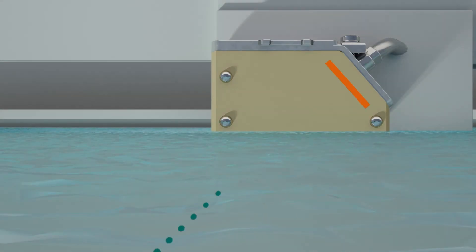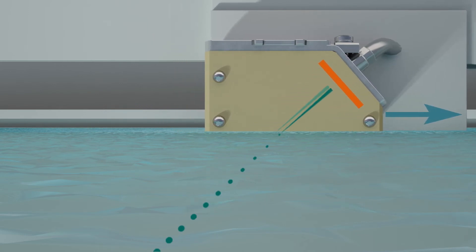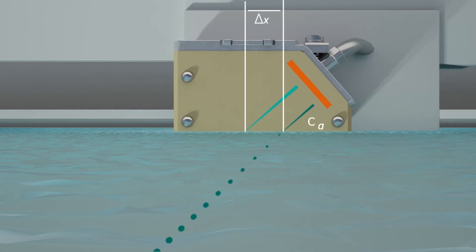During the direct transducer calibration patented by Flexim and named Aperture Calibration, the spatial signal shift, instead of being induced by flow, is caused by moving the transducer itself by delta x.